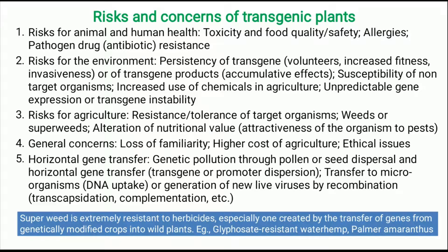Risks for agriculture include resistance or tolerance in target organisms, and the possibility that weeds may develop into superweeds — plants extremely resistant to herbicides — especially when genes are transferred from genetically modified crops into wild plants. An example is glyphosate-resistant waterhemp and Palmer amaranth. Other general concerns include loss of biodiversity among farmers, high-cost risks, horizontal gene transfer, and genetic pollution through pollen or seed dispersal, all of which must be assessed.